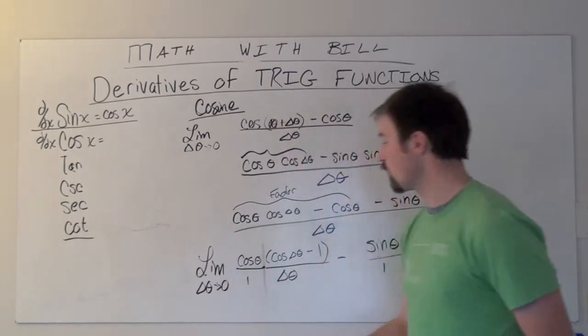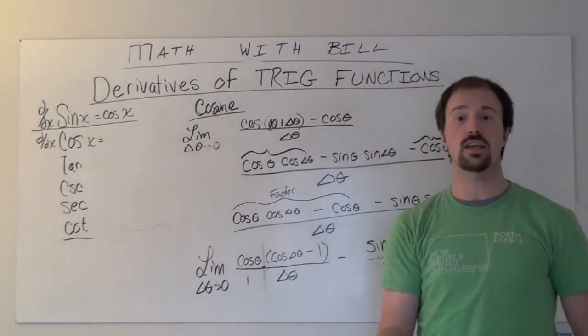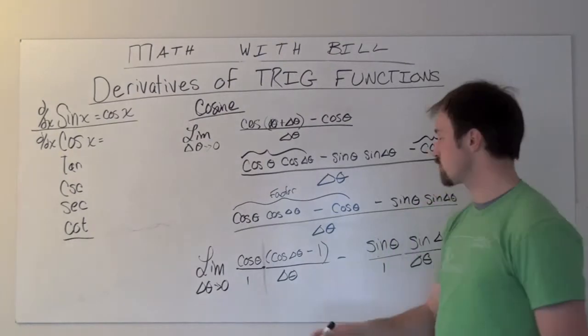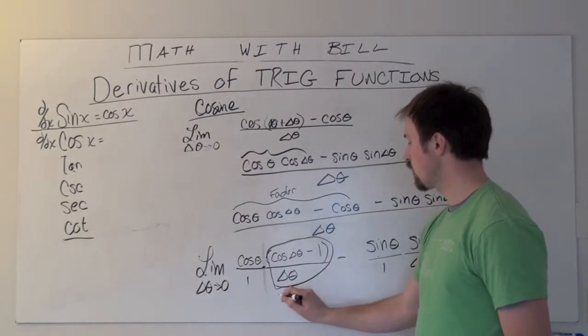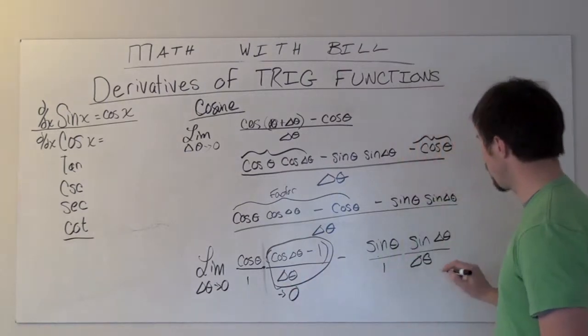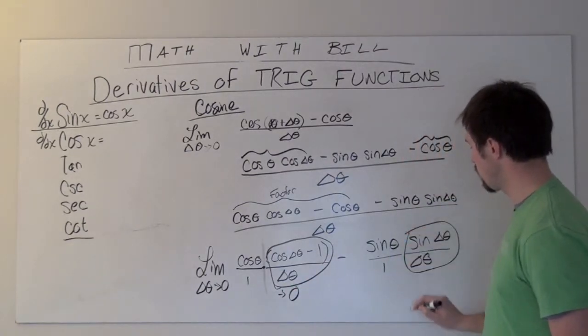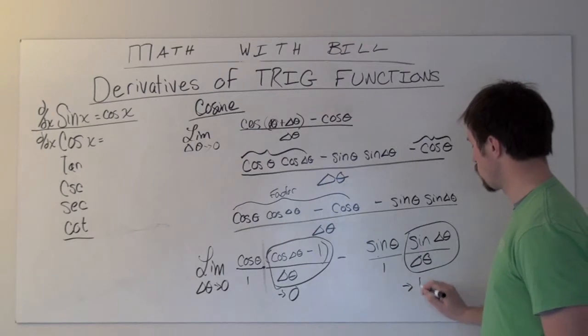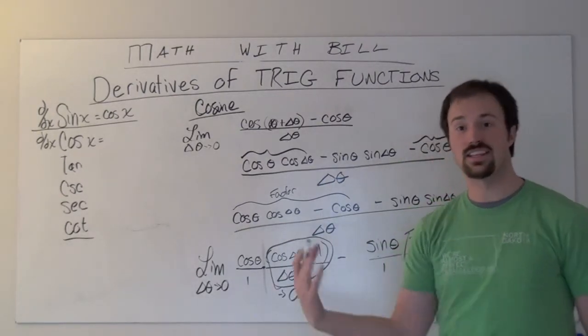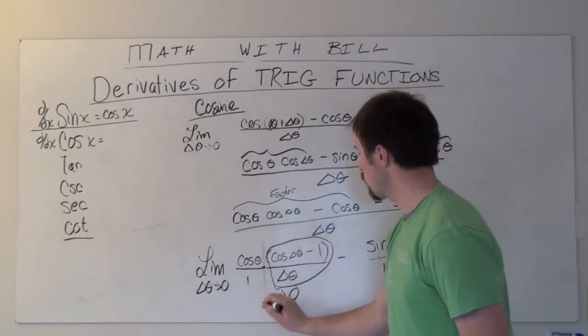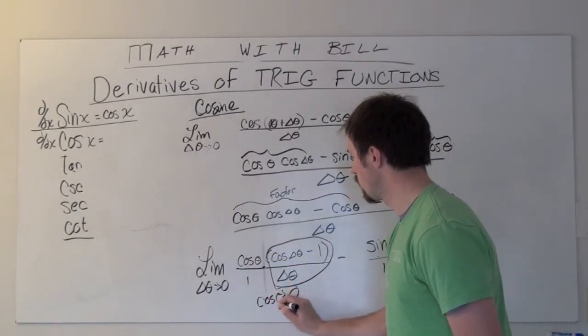As delta theta goes to zero—again, there's a separate video that you should watch that explains why our limit of this quantity approaches zero, and why the quantity sine of delta theta divided by delta theta approaches one. But watch that video. These are those limits.